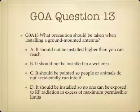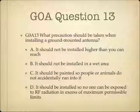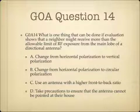Question 13. What precautions should be taken when installing a ground mounted antenna? A, it should not be installed higher than you can reach; B, it should not be installed in a wet area; C, it should be painted so people or animals do not accidentally run into it; or D, it should be installed so no one can be exposed to RF radiation in excess of maximum permissible limits? Question 14. What is one thing that can be done if evaluation shows that a neighbor might receive more than the allowable limit of RF exposure from the main lobe of a directional antenna? A, change from horizontal polarization to vertical polarization; B, change from horizontal polarization to circular polarization; C, use an antenna with a higher front-to-back ratio; or D, take precautions to ensure that the antenna cannot be pointed at their house?